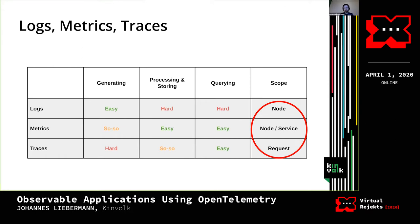I want to draw your attention to the rightmost column of the table. Logs are great for events within a specific node or machine. Metrics give you a high-level overview of a node or your entire service. But only traces allow you to easily follow the lifetime of a specific request across your entire stack, which is particularly useful in microservices or distributed applications.